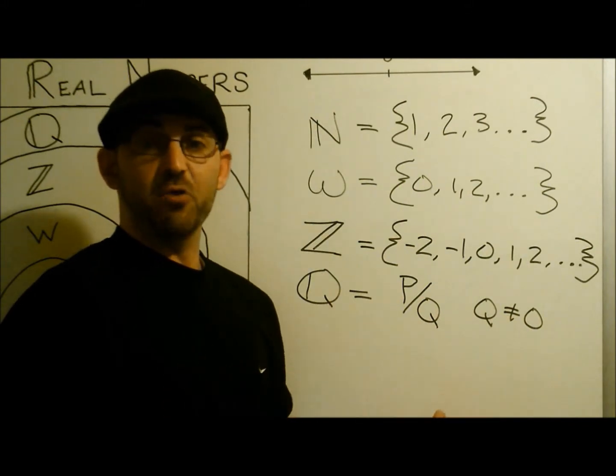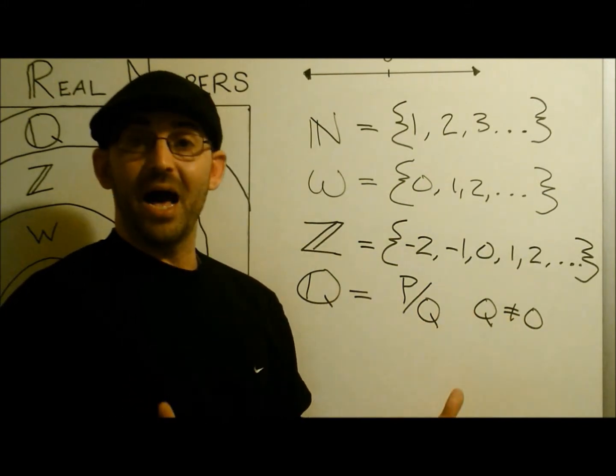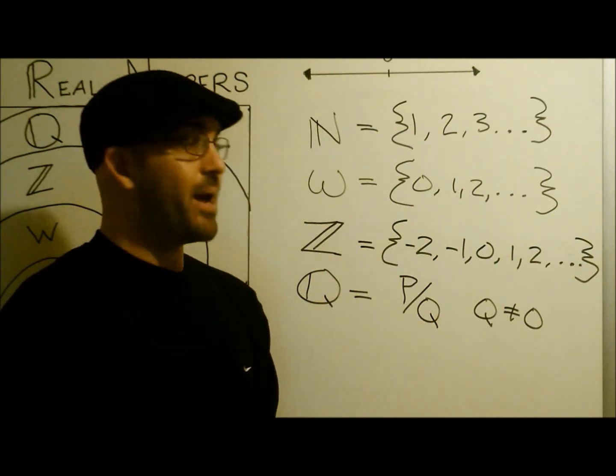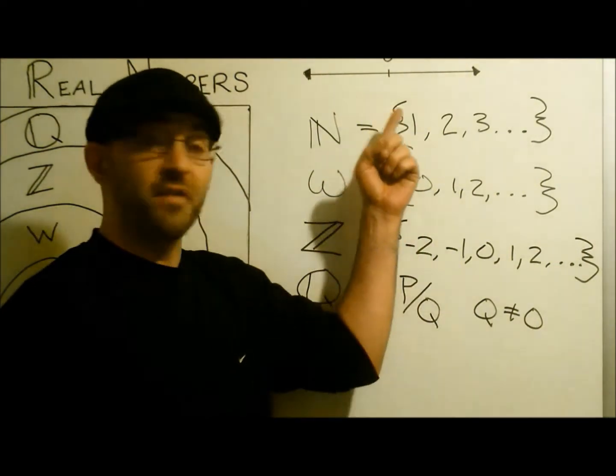What about other numbers, such as irrational numbers? We have pi, the square root of two, the banker's constant, E. These are all numbers that cannot be represented by a fraction, but yet they are on the number line.